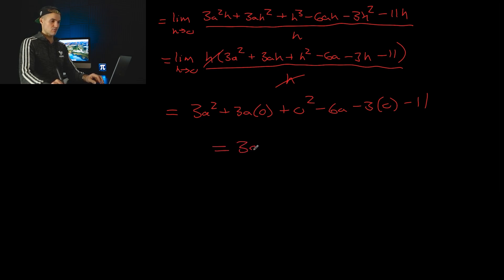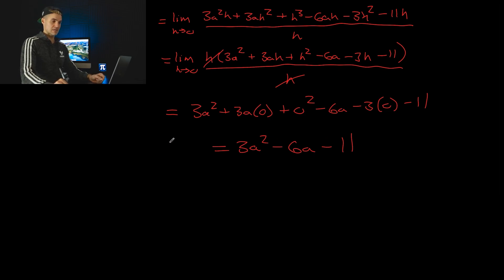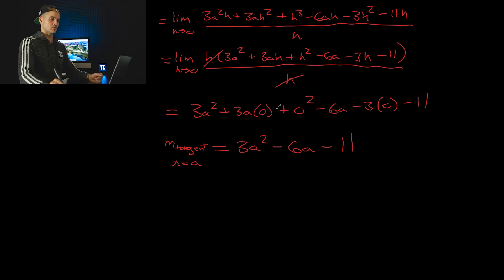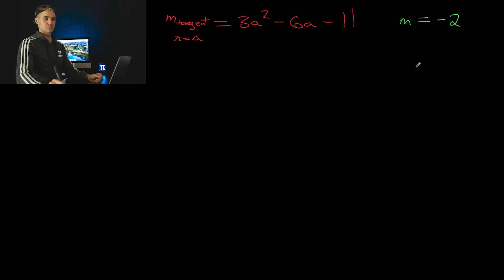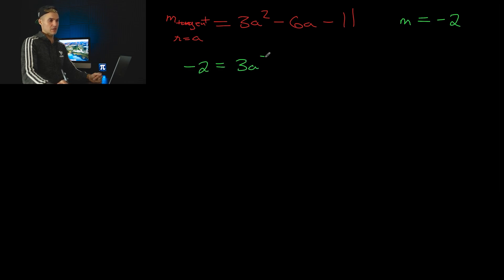This expression, three a squared minus six a minus eleven, gives us the slope of the tangent on f of x at any x value a — this is the general expression, also called the derivative. We're trying to find the a values where the slope of the tangent equals negative two, which is when it's perpendicular to the slope of one half. So we plug in negative two and solve for those a values.